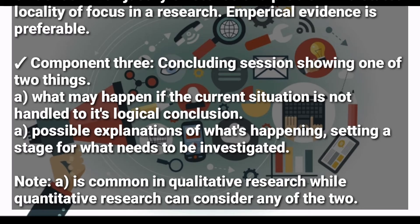To recap, those are the three main components of statement of a problem. Component one introduces the problem at hand. Component two gives details about the evidence justifying the existence of a stated problem in a stated locality or focus. Component three is a concluding section covering what may happen if the current problem is not handled, and giving possible explanations of what is happening to set the stage for what needs to be investigated.